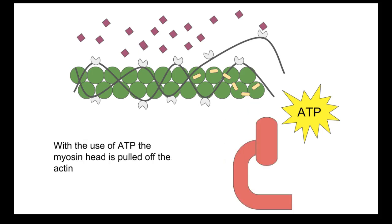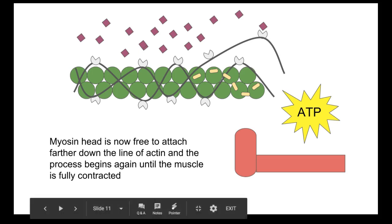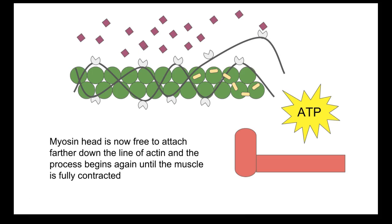Once that happens, the myosin head can be pulled off, goes back to normal — no longer flexed — and is free to attach further along on the actin. That piece of tropomyosin goes back to normal, another calcium attaches to another troponin and removes that piece of tropomyosin so the myosin head can attach again, and it keeps doing this over and over until the muscle has fully contracted.